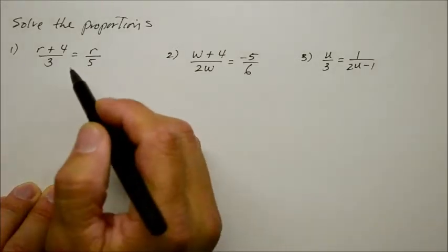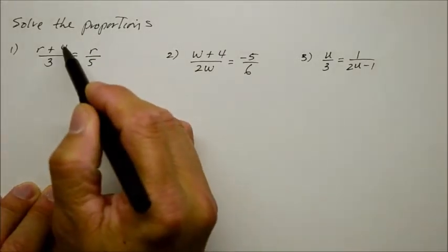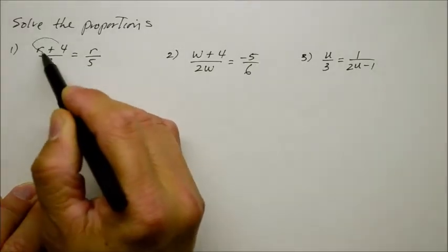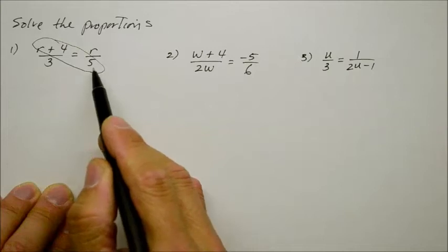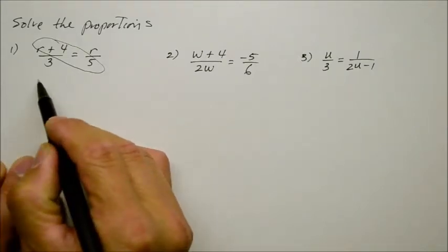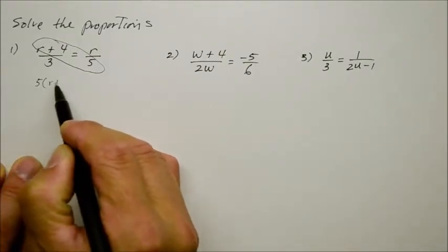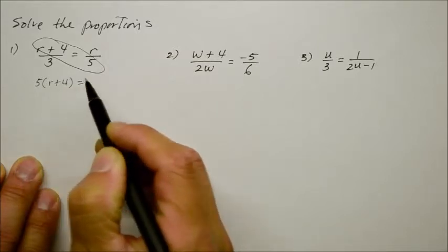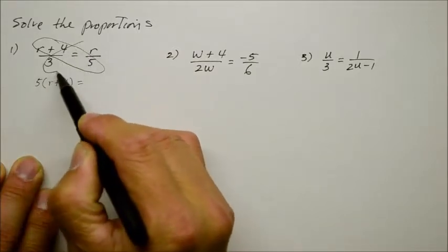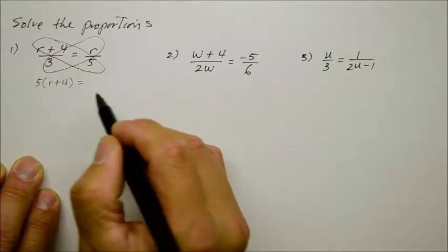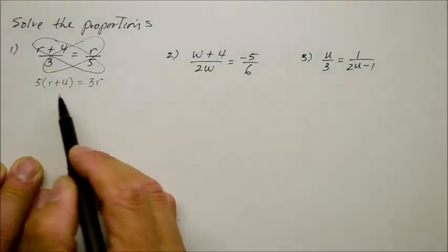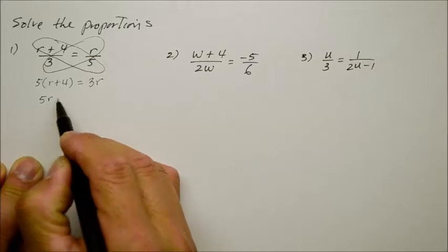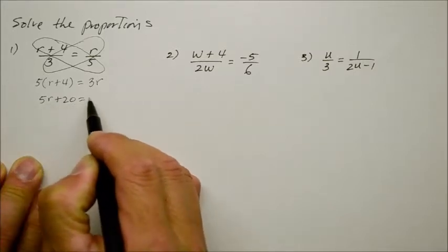Number one, we're going to cross multiply. It really doesn't matter which is which, but I'll just go from this way. The r plus 4 with the denominator 5. And so it looks like 5 times the quantity of r plus 4. Now on the right side, we will have 3 times r. That's simply 3r. Now let's do the distributive property. We get 5r plus 20 is equal to 3r.